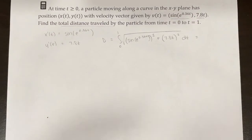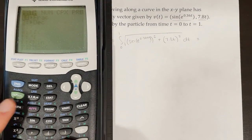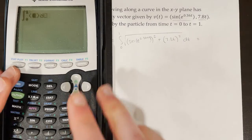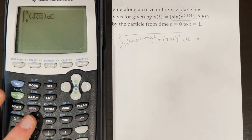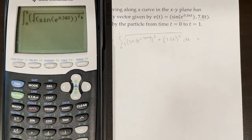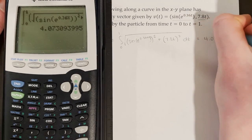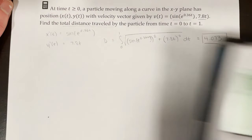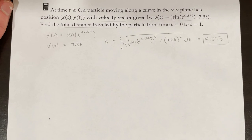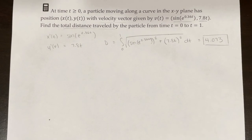We use math 9 to integrate, go from 0 to 1, don't forget the square root, and plug everything in. The calculator gives 4.073. So 4.073 is the total distance traveled by the particle from t = 0 to t = 1. Since no units were provided, the answer is simply 4.073.